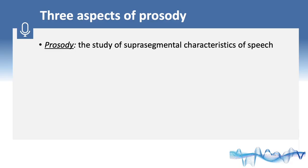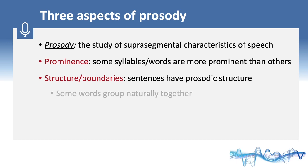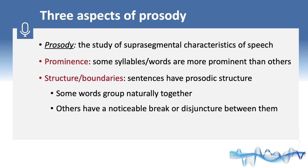There are mainly three aspects of prosody: prominence, structure, and tone. Some syllables and words are more prominent than others. Sentences have prosodic structure or boundaries. For example, some words group naturally together, others have a noticeable break or disjuncture between them. Tune means the intonational melody of an utterance.